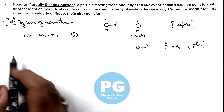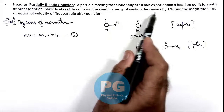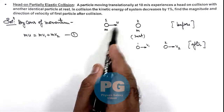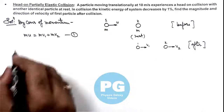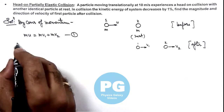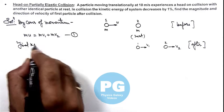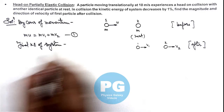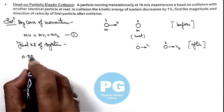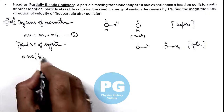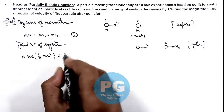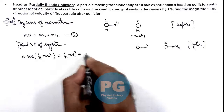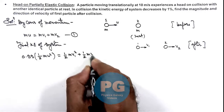We are given that after collision, the kinetic energy of the system decreases by 1 percent. So the initial kinetic energy is ½·m·u². The final kinetic energy can be written as 0.99 times ½·m·u², which equals ½·m·v1² plus ½·m·v2².